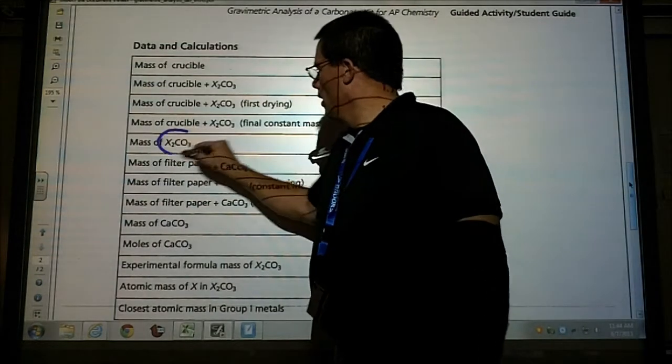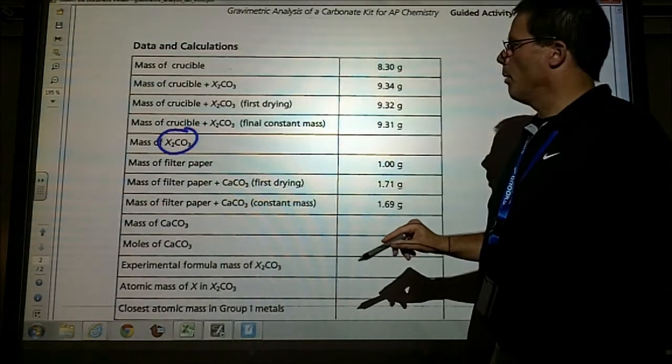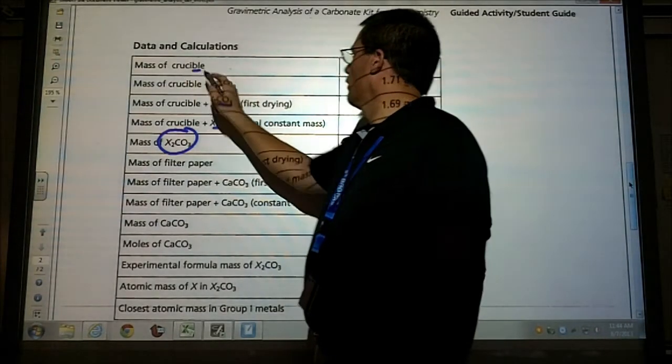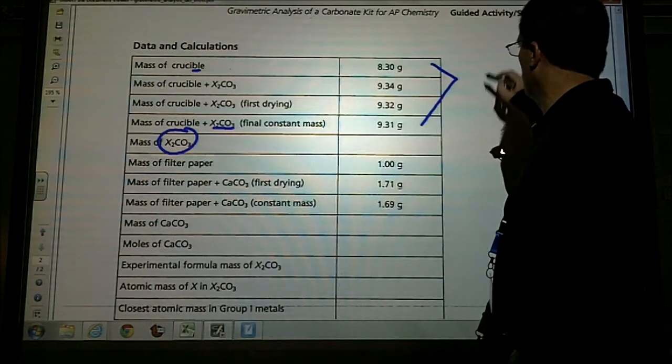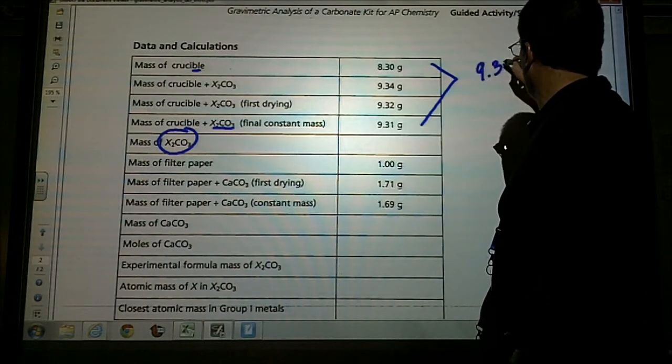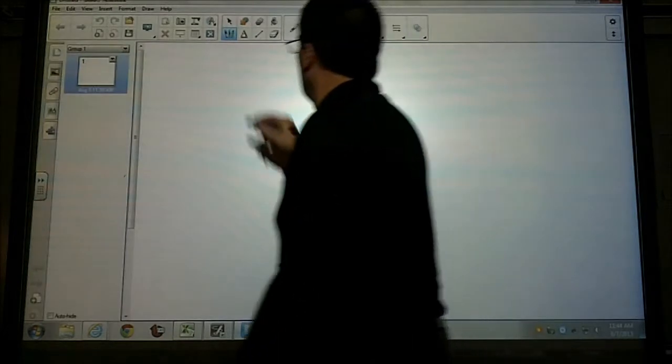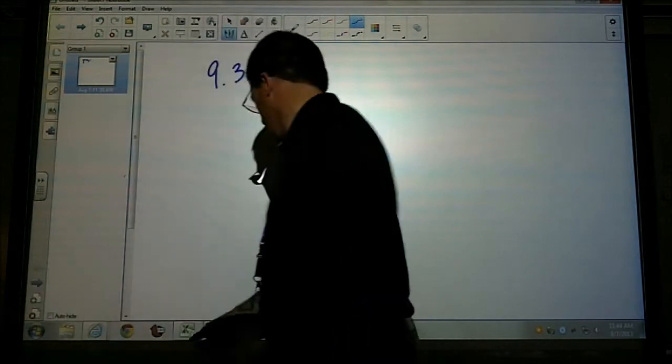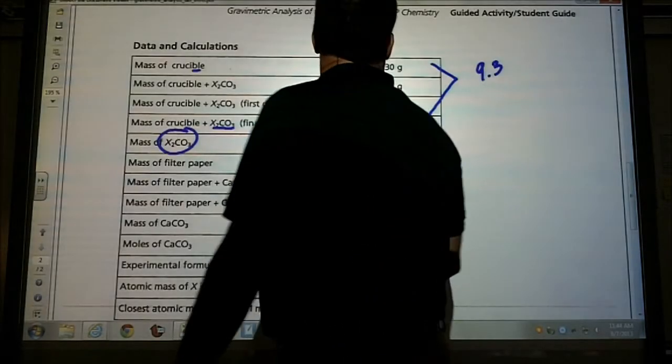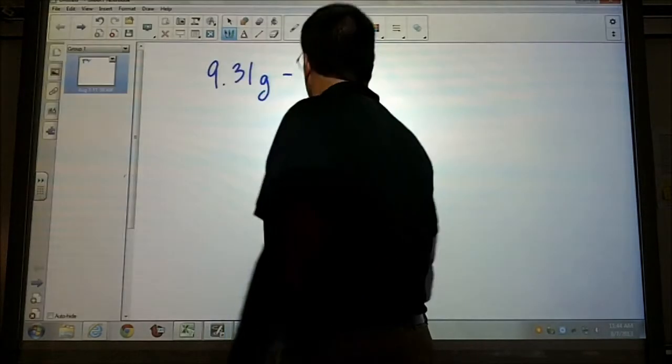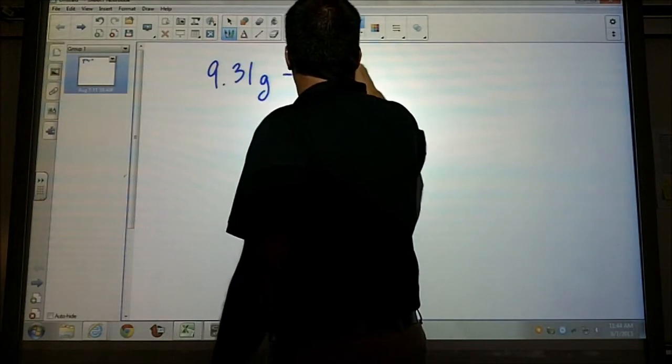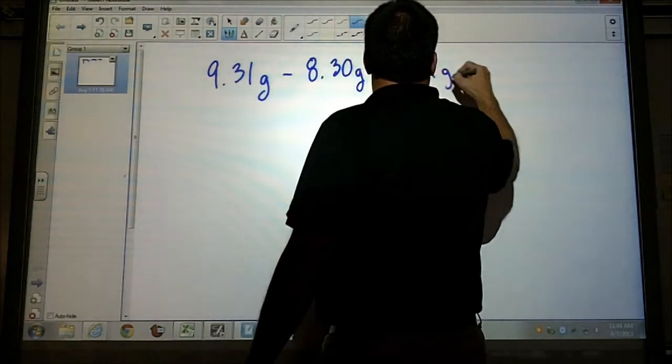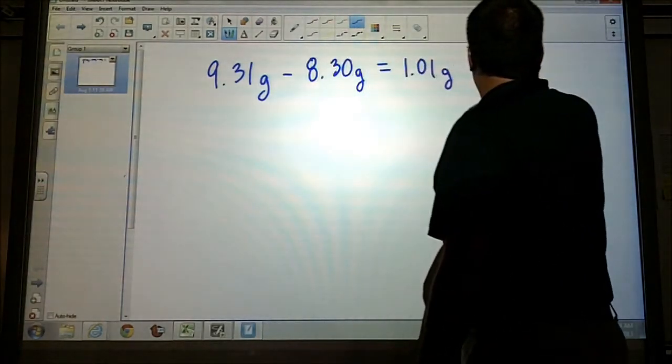Then we did a second heating, and it came out to be that was the actual mass. After a couple more heatings, we found that the constant final mass was 9.31 grams. So let's first determine the mass of this unknown compound. How would you do that? If we're looking for our unknown compound, it probably would stand to reason that we want to take this minus this.